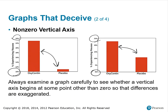Here's an example of two graphs that depict the same information. The graph on the left doesn't have a zero starting point — it actually starts at 10%. The graph on the right does have a zero starting point. The graph on the left would make you believe that there's a bigger difference between those using OxyContin and their experience with nausea than the placebo, when in reality there's not that big of a difference. Always examine a graph carefully to see whether a vertical axis begins at some point other than zero so that differences are exaggerated.